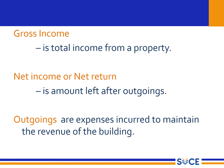Next are the basic terms associated with valuation. The first one is gross income. Gross income is the total income that you get from a property — how much you actually collect from the tenant. If you have a property and the tenant is paying you rent of 5,000 per month, the annual rent for that property is going to be 12 into 5,000, which is 60,000 per year.